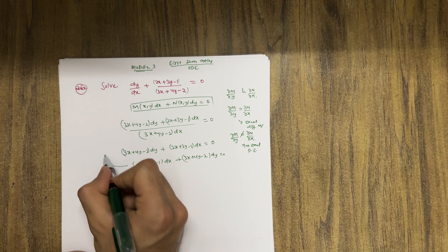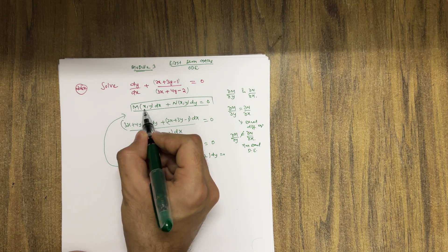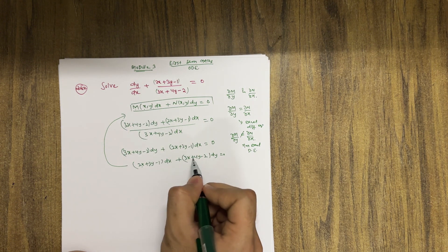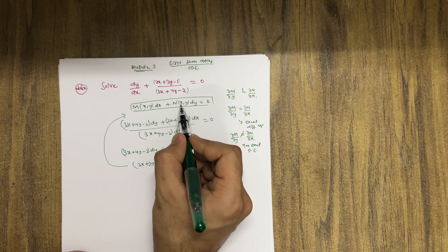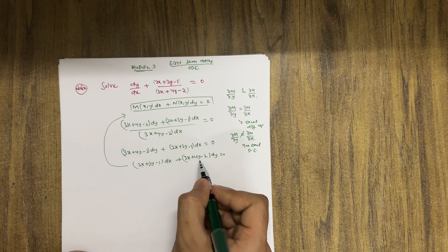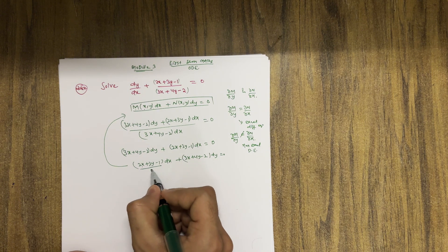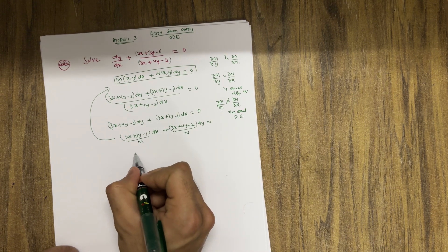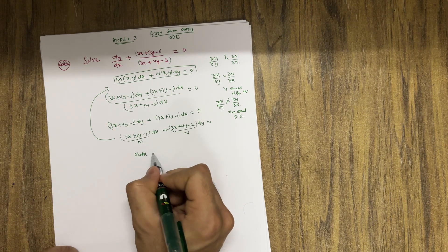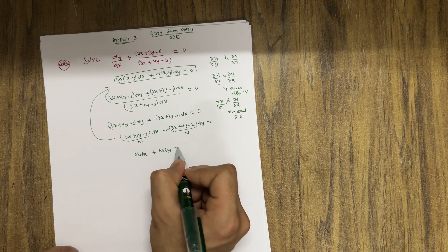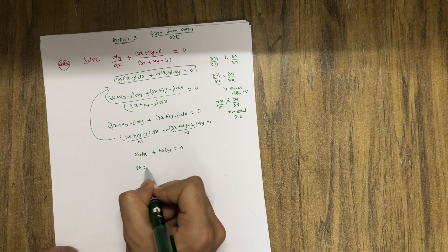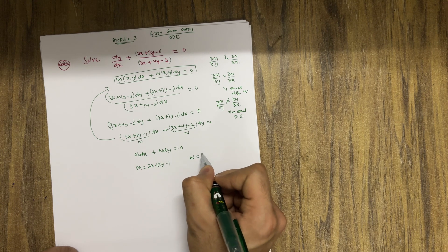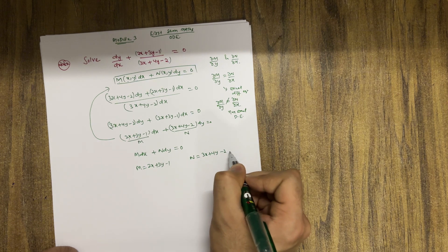Now compare this equation with the standard form Mdx + Ndy = 0. Here 2x + 3y - 1 is a function in terms of x and y, so M = 2x + 3y - 1. Similarly, N = 3x + 4y - 2. We have identified which term is M and which is N.